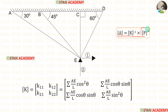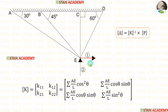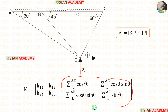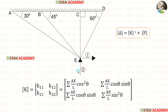Now let us see how to calculate the stiffness matrix. If we keep the horizontal coordinate rightwards and the vertical coordinate upwards, we can apply the relevant formulas to easily find the stiffness matrix. We have to be very careful to make the coordinates in this way.